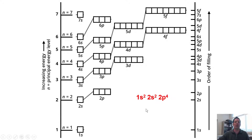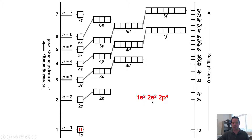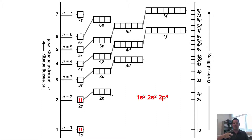To draw oxygen's orbital energy diagram, I start with the 1s shell, which has two electrons — placed in the lowest box since it's closest to the nucleus. Next is the higher-energy 2s shell with two electrons (2s2), so I put one up arrow and one down arrow in that box. Then I move to the 2p shell, which has three boxes for the px, py, and pz orbitals, and four electrons to place.